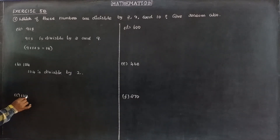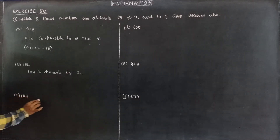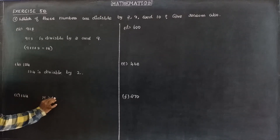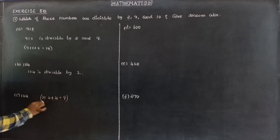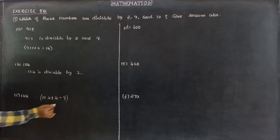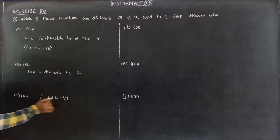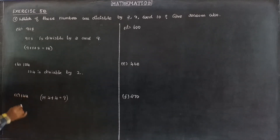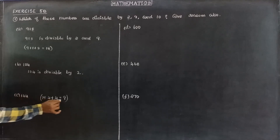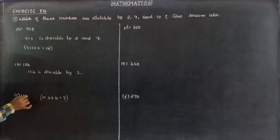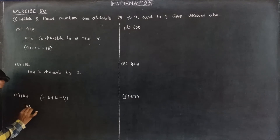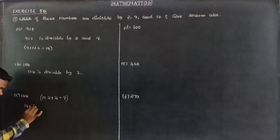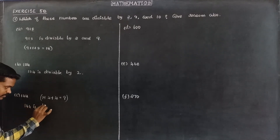Next, 144. The sum of the digits is 1 plus 4 plus 4 equals 9. Since 9 is divisible by 9, the number is also divisible by 9. 144 is an even number, so it is divisible by 2 as well. Therefore, 144 is divisible by 2 and 9.